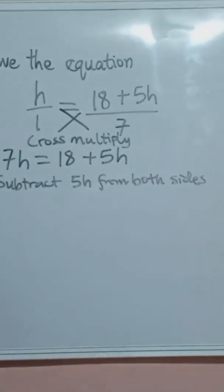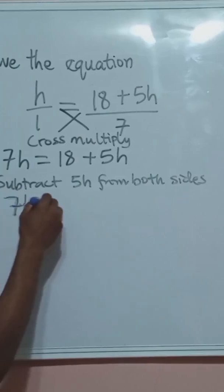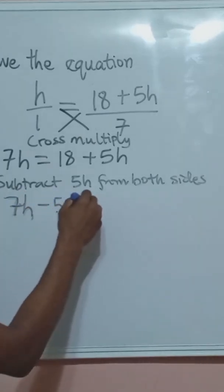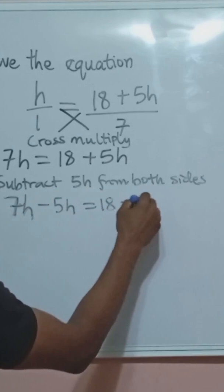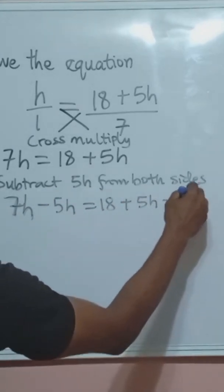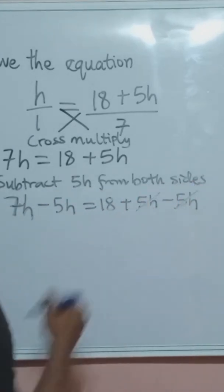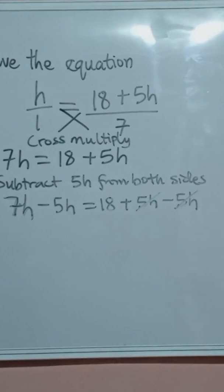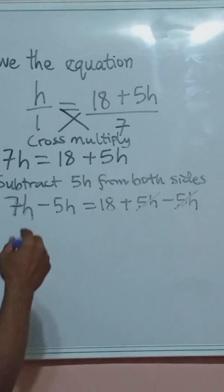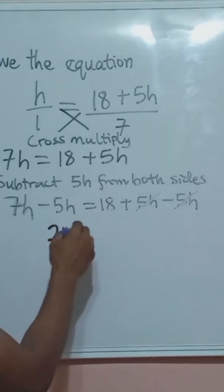So if we subtract 5h from both sides we are having 7h minus 5h equals to 18 plus 5h minus 5h. This cancels out leaving us with 7h minus 5h equals to 18.